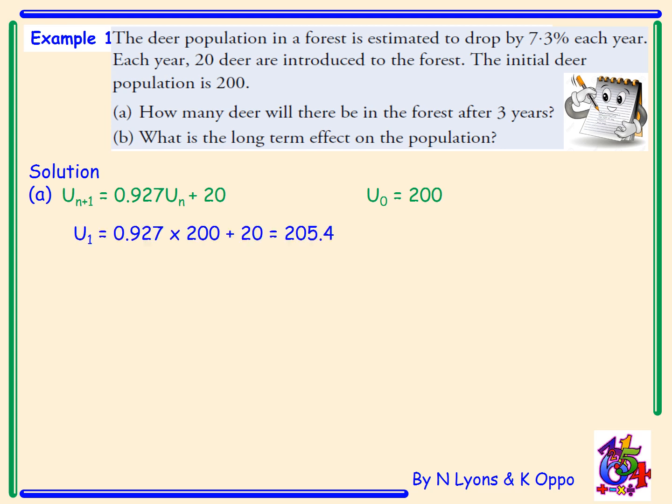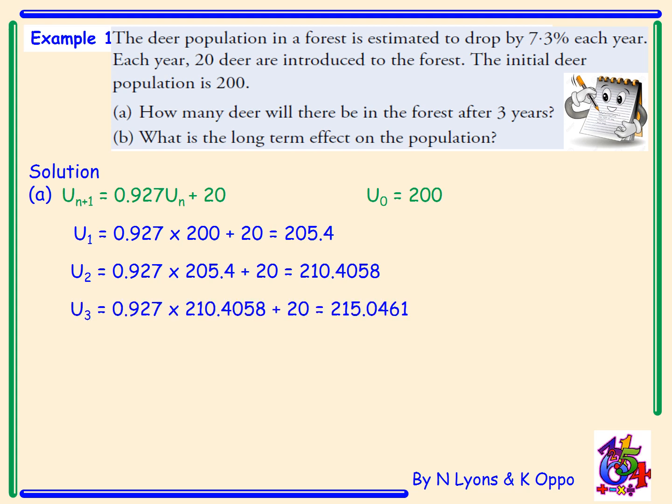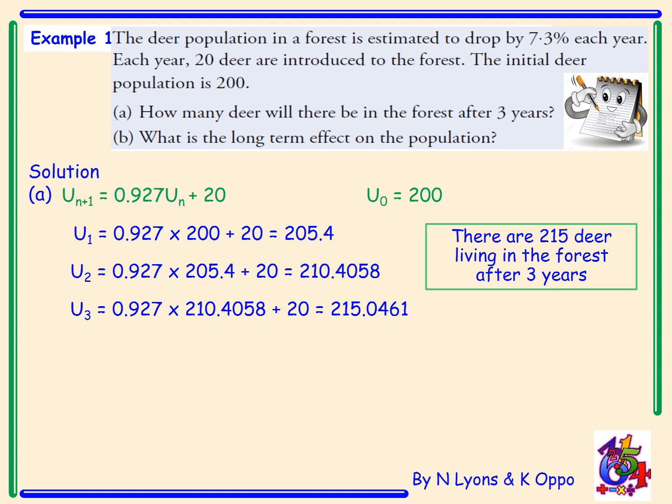To get the value after year 1, we calculate 0.927 × 200 + 20 = 205.4. After year 2, applying the same process gives 210.4058. After year 3 the population is 215.0461. We always round this answer down because we can't have a fraction of a deer, therefore there are 215 deer living in the forest after 3 years.